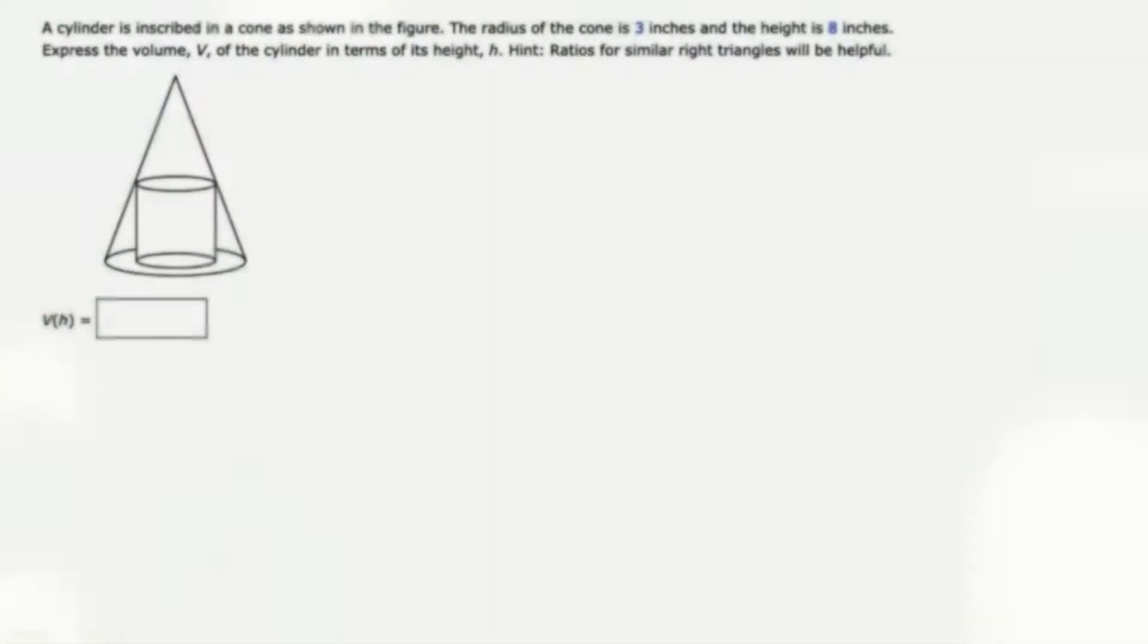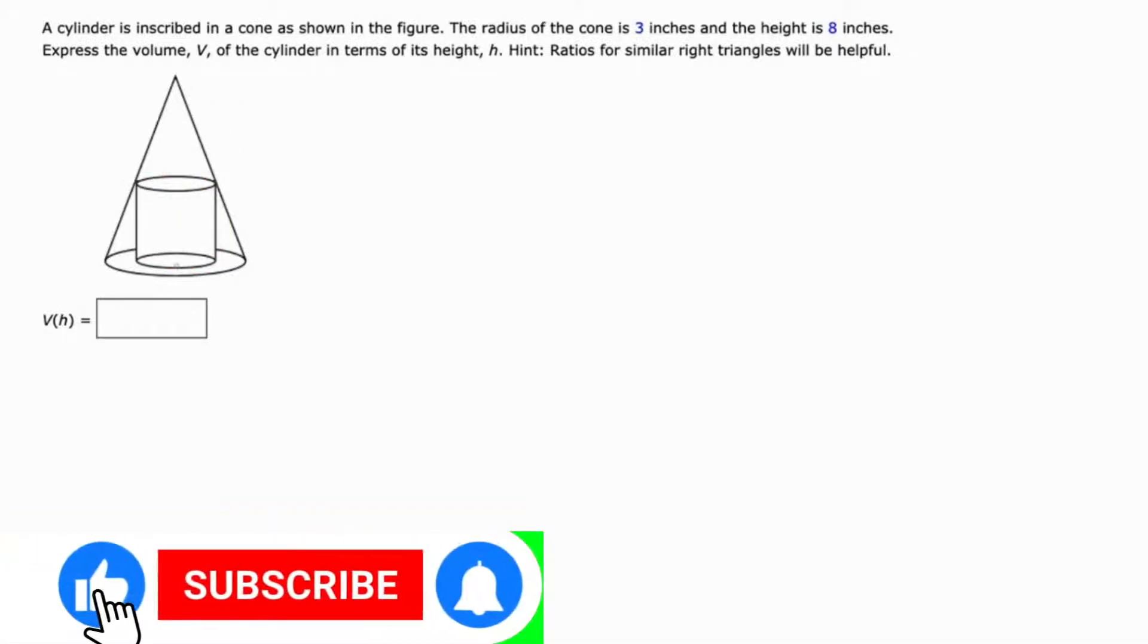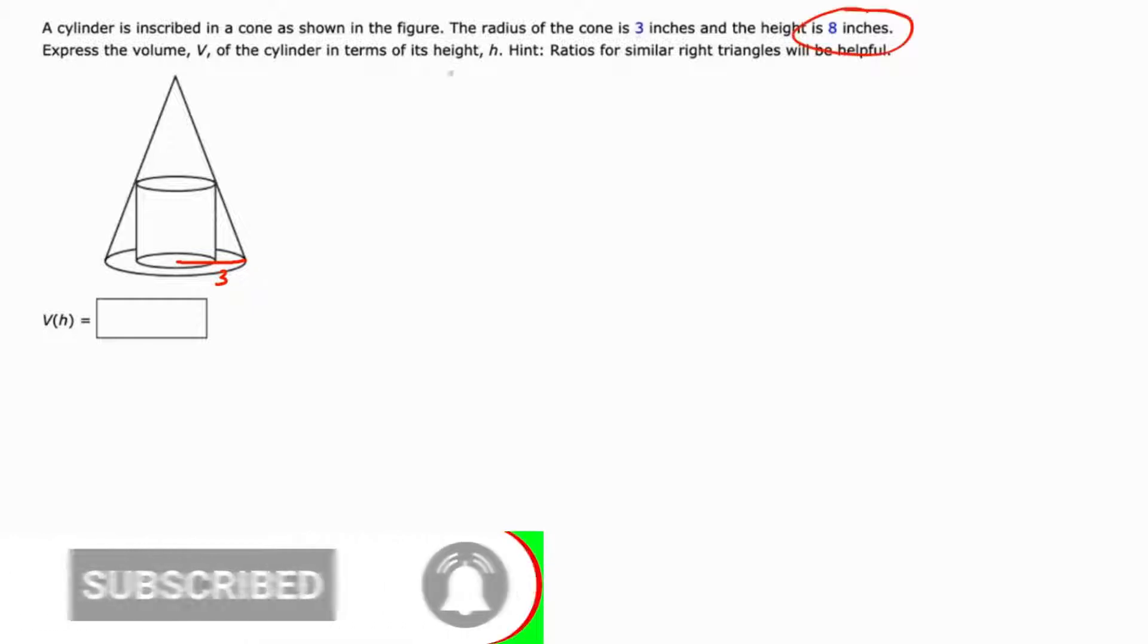This is an interesting question. We have a cylinder inscribed inside a cone. The radius of the cone is 3 inches, and the height is 8 inches.